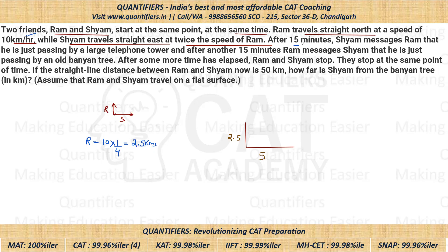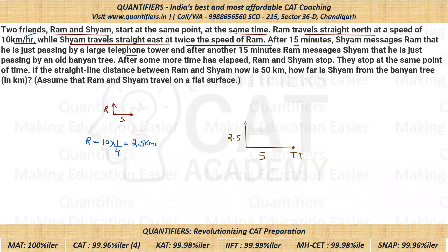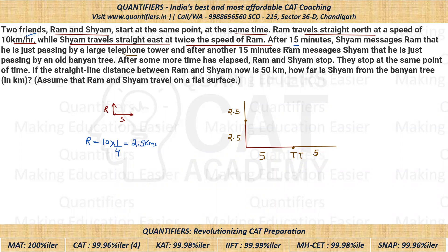After 15 minutes, Sham messages Ram that he is passing by a large telephone tower — so this is the telephone tower. Further, after another 15 minutes, Ram will travel another 2.5 kilometers and Sham will travel another 5 kilometers. So now Ram has covered a total of 2.5 km and Sham 5 km in the first phase. Then Ram messages Sham that he is passing by an old banyan tree — so this is the banyan tree.